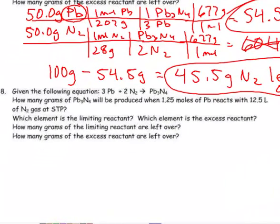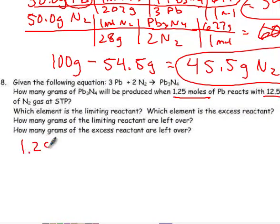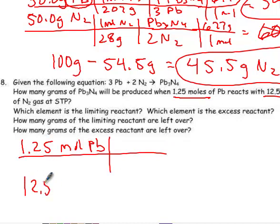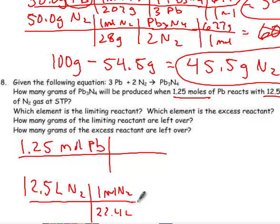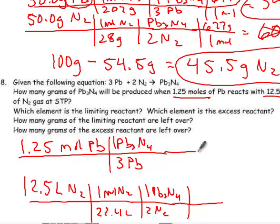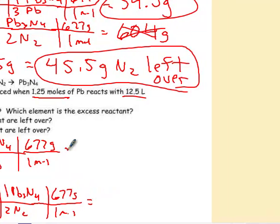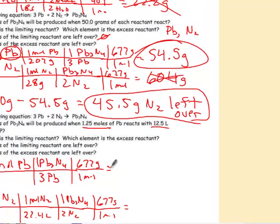All right, so now, for the last one, you can see I just changed things up, and I gave you moles and liters. So, we have to do some more calculating. 1.25 moles of lead and 12.5 liters of nitrogen. At STP. So, first step in stoichiometry, get moles. Got moles in lead, so I have to do 22.4 liters and 1 mole of N₂. All right, now for my ratio. The ratio is 3 leads to 1 Pb₃N₄. It is 2 nitrogens to 1 Pb₃N₄. So, just like before, we're now going to go to grams. We already did the molar mass up there as 677. So, 1 mole and 677. All right, so there's going to be our answer to the stoichiometry problem as to which one runs out first.